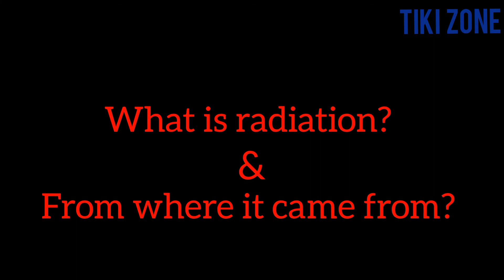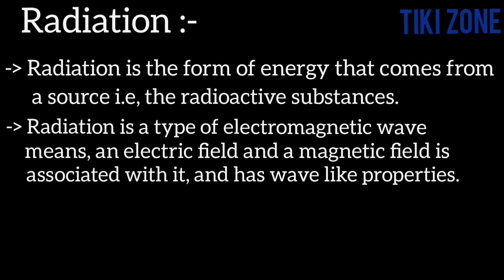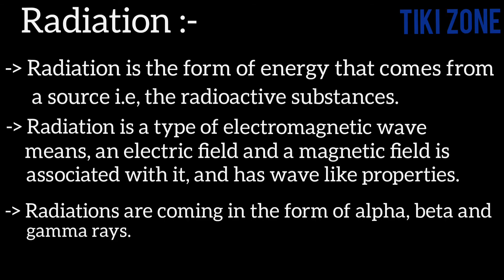First of all we have to know what radiation means. Radiation is the form of energy that comes from a source — the radioactive substances. That means radioactive substances are the sources of radiation. Radiation is a type of electromagnetic wave, meaning an electric field and a magnetic field is associated with it and it has wave-like properties. Radiations come in the form of alpha, beta and gamma rays.